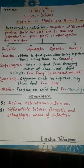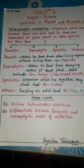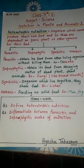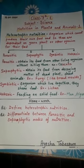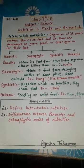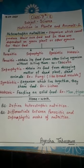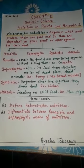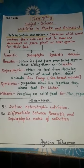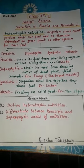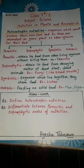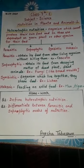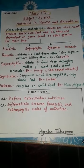The last type is holozoic nutrition. In holozoic nutrition, organisms take solid food — whether it is a plant product or animal product. We can say that holozoic nutrition is that nutrition in which an organism takes complex food material into its body. For example, man, tiger, cow, etc.